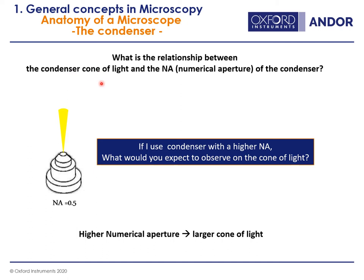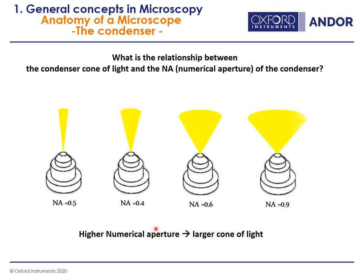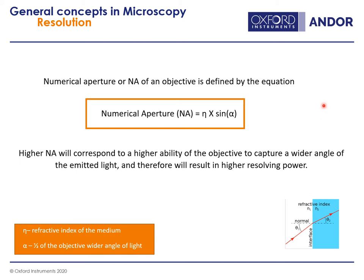What is the relationship between the condenser and the numerical aperture? When we increase the numerical aperture of the condenser, more light passes through the condenser to go to the sample. The numerical aperture of an objective is defined by the equation: NA = n × sin(α), where n is the refractive index and α is one-half of the widest angle captured by the objective. Therefore, the numerical aperture is directly related with resolution — higher numerical aperture corresponds to higher resolving power.